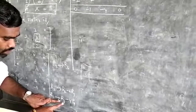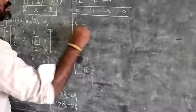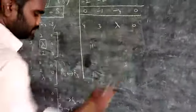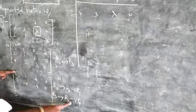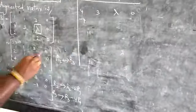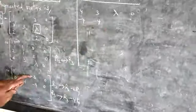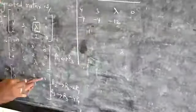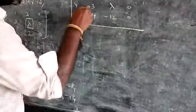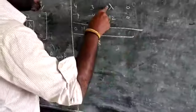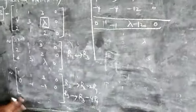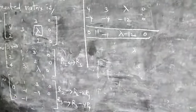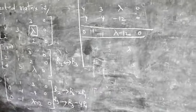For R3, apply R3 → R3 − 4R1. R3 is 4, 3, lambda, 0. Multiply R1 by −4: −4, −4, −12, 0. Then: 4−4=0, 3−4=−1, lambda−12, 0+0=0. So R3 becomes 0, −1, lambda−12, 0. Now we have: R1: 1, 1, 3, 0; R2: 0, −1, −4, 0; R3: 0, −1, lambda−12, 0.